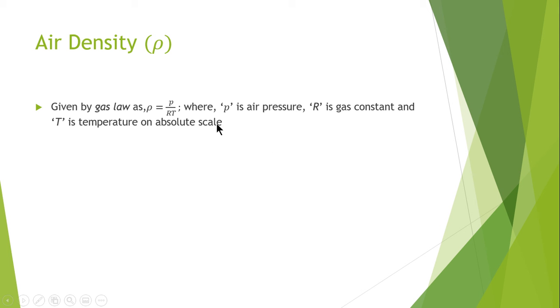The air density rho is given by the gas law as rho equals P divided by RT, where P is the air pressure, R is a gas constant, and T is the temperature on absolute scale.